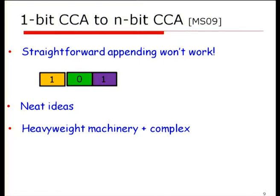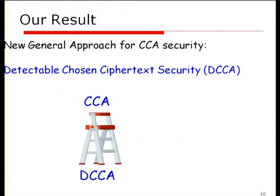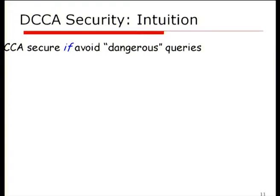In some sense, one thing we'll do in this work is capture that result more simply, among other things. I'm going to introduce a new notion called detectable chosen ciphertext security. This isn't a goal in and of itself, but it's a good target in that many natural schemes can map into it. I'll also show how to build from any detectable scheme to a fully chosen ciphertext secure scheme.